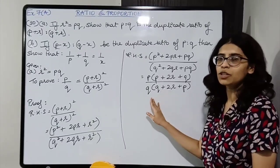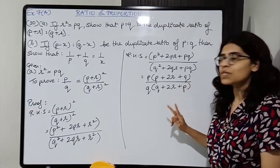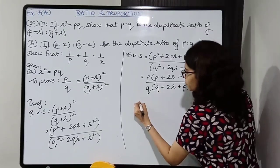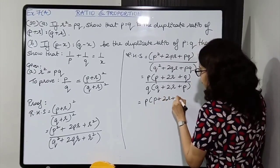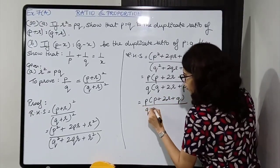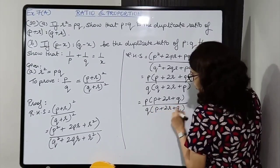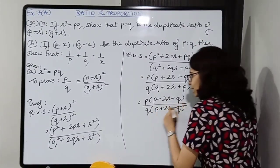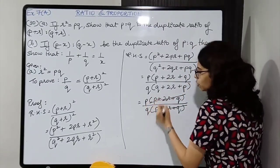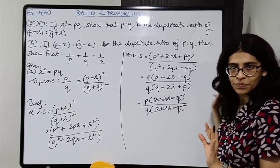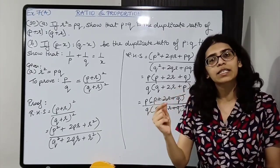Write down the given: P minus X upon Q minus X in brackets is equal to the square of P upon Q. Now cross multiply: Q squared into P minus X equals P squared into Q minus X. Opening brackets: PQ squared minus Q squared X equals P squared Q minus P squared X.